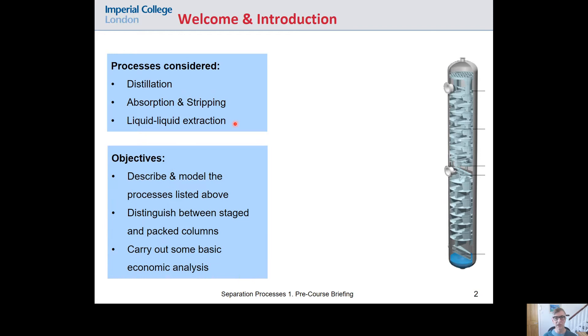The objectives of the course are really three. The first is to be able to describe and model the processes I just listed. Model means essentially that you can carry out quantitative design calculations to for example design a distillation process that would work. We need you to be able to distinguish between staged and packed columns. That's something you'll come to learn about in the course itself and to do some basic economic analysis. So those are really the three things that you need to be able to do by the end.